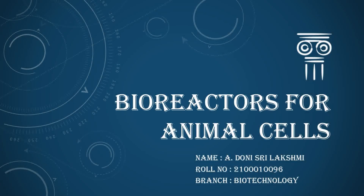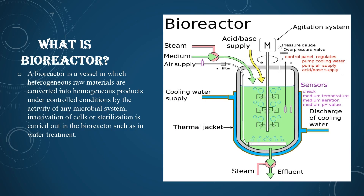Hi everyone, this is Tony from Biotechnology 2100010096. Let us learn about bioreactors for animal cells. A bioreactor is a vessel in which heterogeneous raw materials are converted into homogeneous products under some controlled conditions by activation of any microbial system. These controlled conditions include pressure, pH, and temperature. In some cases, inactivation of cells or sterilization is carried out in the bioreactor, such as in water treatment.